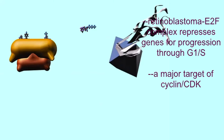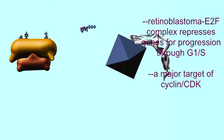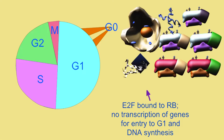In the inactive cell, which has not passed the G0-G1 checkpoint, retinoblastoma is still bound to E2F. As such, it represses the activity of genes which are required to enter the S phase and replicate DNA.